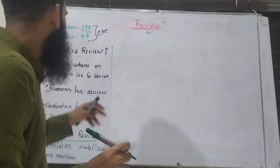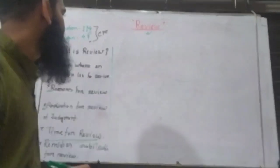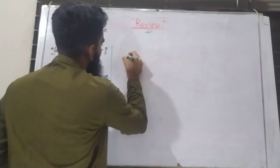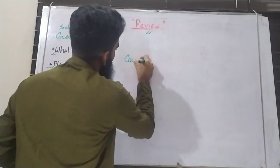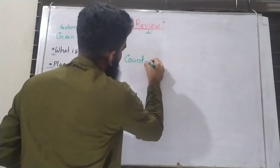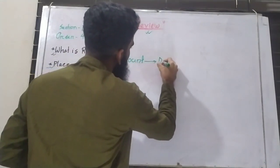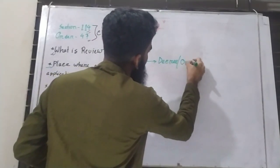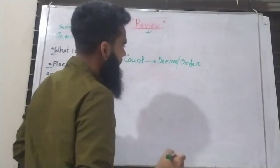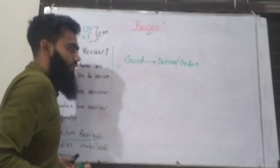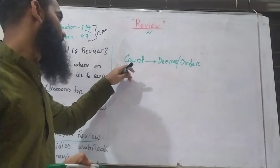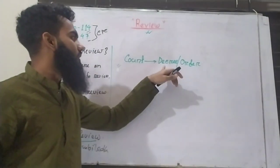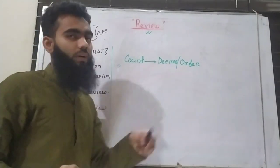First, you can see that the review is fine. Here you can see that the court will give judgment — a decree. It is called in order. The code is written in order with decree and order.